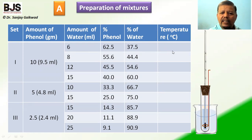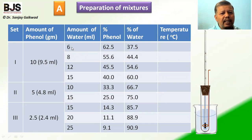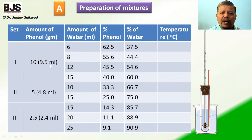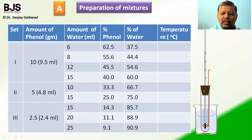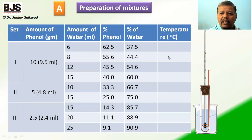In the second set, we take 10 grams of phenol with 8 ml of water. Since we already added 6 ml of water in the first set, we add just 2 ml more from the burette into the same hard glass tube. This gives 9.5 ml phenol and 8 ml water — a proportion of 55.6% phenol and 44.4% water. We heat this mixture in the water bath with constant stirring. We record temperature T1 when a homogeneous solution forms, and T2 when, upon slow cooling, the solution again becomes turbid. The average of T1 and T2 is recorded as the temperature.